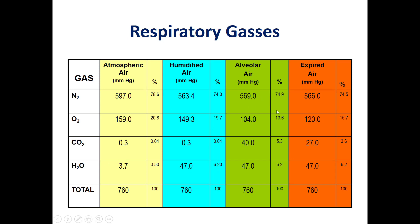At the alveoli, the percentage of gases will be different again. Nitrogen will be the same or increase slightly. Oxygen will drop from around 20% to around 13.5%. CO2 will increase from 0.04% to 5.3%, while H2O will remain the same.